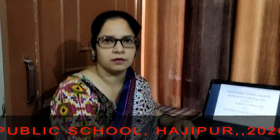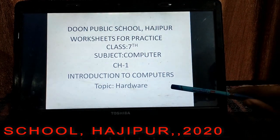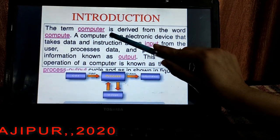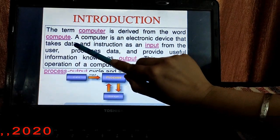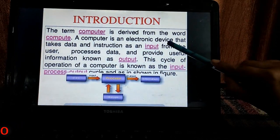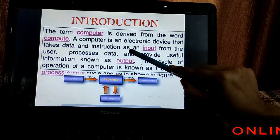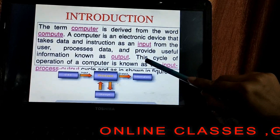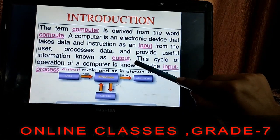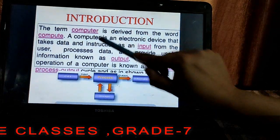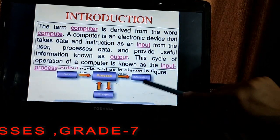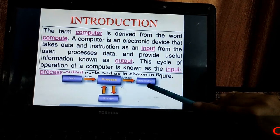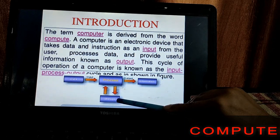Topic: Hardware. Before getting familiar with the term hardware, we should know what a computer is. A computer is basically derived from the word 'compute' — it is an electronic device that takes data and instructions as input from the users, processes it, and provides useful information known as output. The computer works on the IPO cycle: input data, process, and output as information, and it stores data in storage devices.